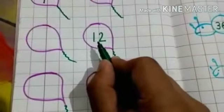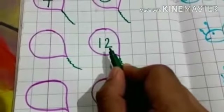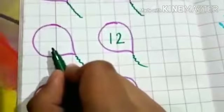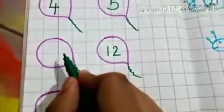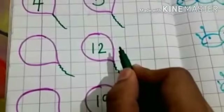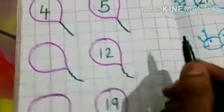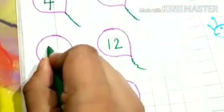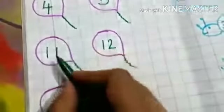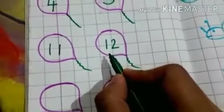Abhi yahan pe dekhe. Which number is this? Yes, 12. Toh humein 12 ke aage ka number likhna hai. Yahan pe kaunsa number aayega? Jo number ke baad 12 number aata hai. Yes, 11. Toh hum yahan pe likhenge 11. 11 ke baad 12 number aata hai.